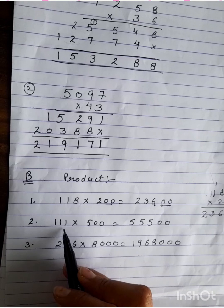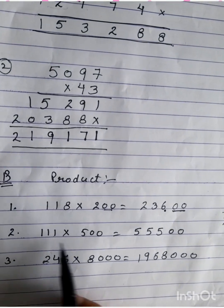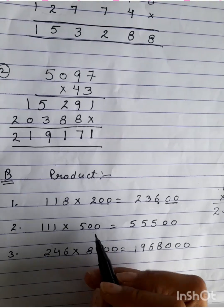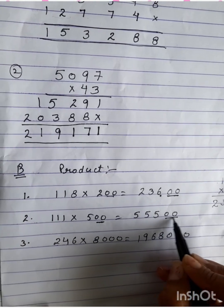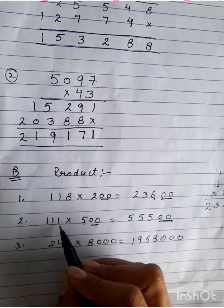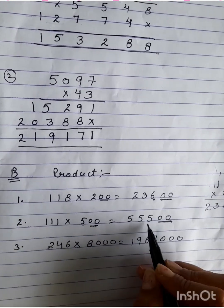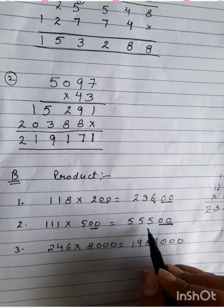Similarly, in the next question, 111 into 500. Again, two zeros are there. So I have written two zeros as is. Then 5 times 1 is 5, 5 times 1 is 5, and 5 times 1 is 5.